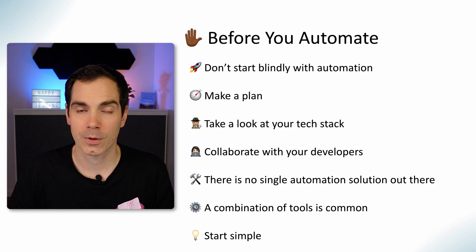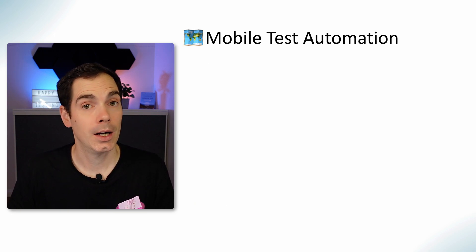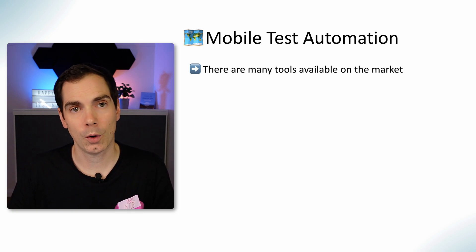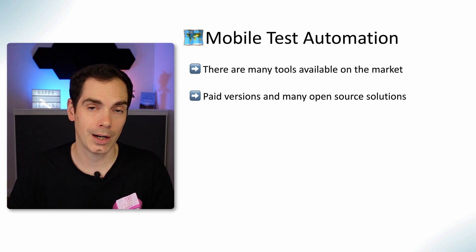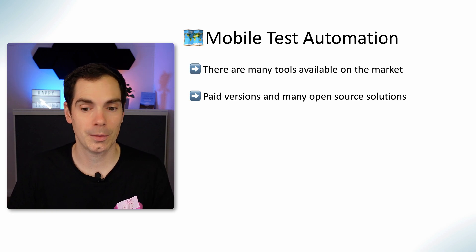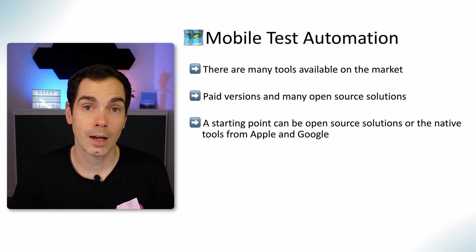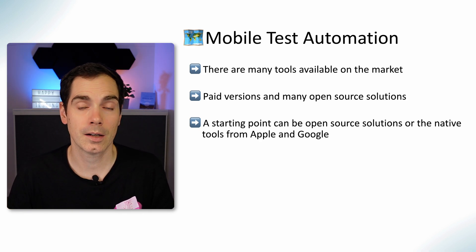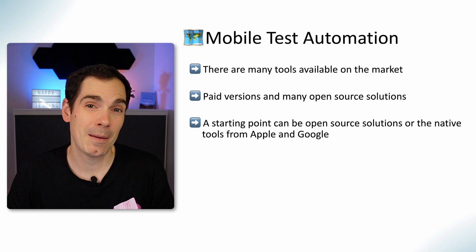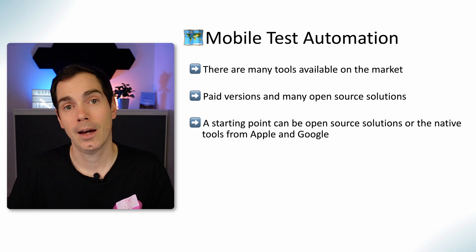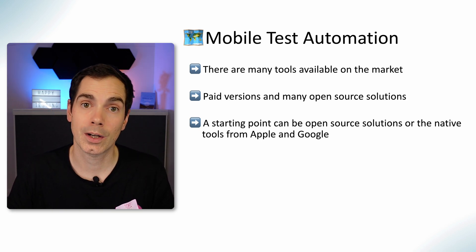Implement a user journey, implement something on the API level or screen level, and see how the tool works for you. Now let's get into mobile test automation. There are many tools on the market — from open source to paid to licensed solutions. A starting point can be open source tools or native platform solutions from Apple and Google, and there are plenty of open source tools to start with. But maybe those aren't right for you — there are also really good paid tools on the market.